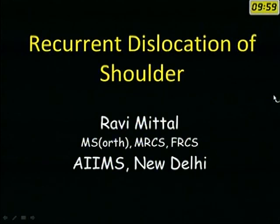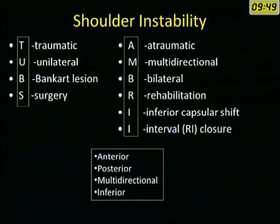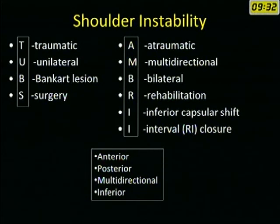Good evening. Shoulder instability is broadly classified into two groups: TUBS and AMBRI. TUBS stands for Traumatic Unilateral instability with a Bankart lesion that needs Surgery if it's anterior. AMBRI stands for Atraumatic instability which is Multidirectional, usually Bilateral, and needs Rehabilitation. If surgery is required it could be inferior capsular shift and interval closure.